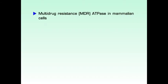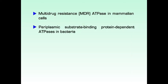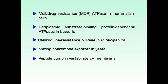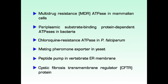The ABC superfamily includes bacterial amino acid and sugar permeases and about 50 mammalian transport proteins, such as multi-drug resistance (MDR) ATPase in mammalian cells, periplasmic substrate-binding protein-dependent ATPases in bacteria, chloroquine resistance ATPase in Plasmodium falciparum, mating pheromone exporter in yeast, peptide pump in vertebrate endoplasmic reticulum membrane, and cystic fibrosis transmembrane regulator (CFTR) protein, to name a few.